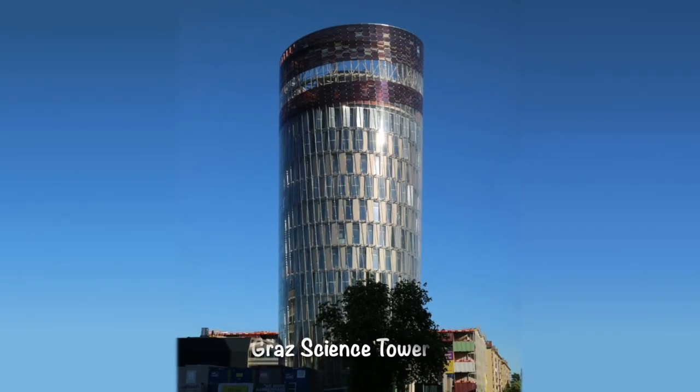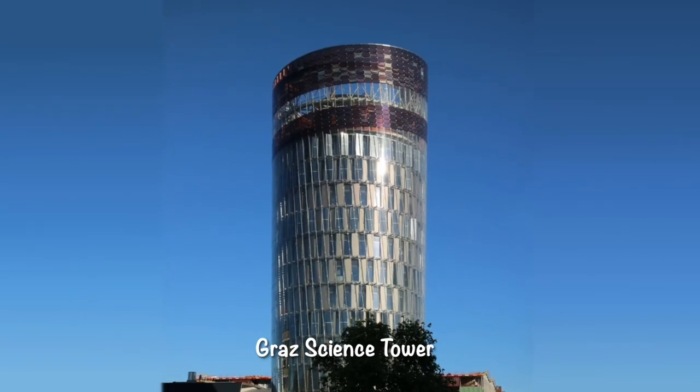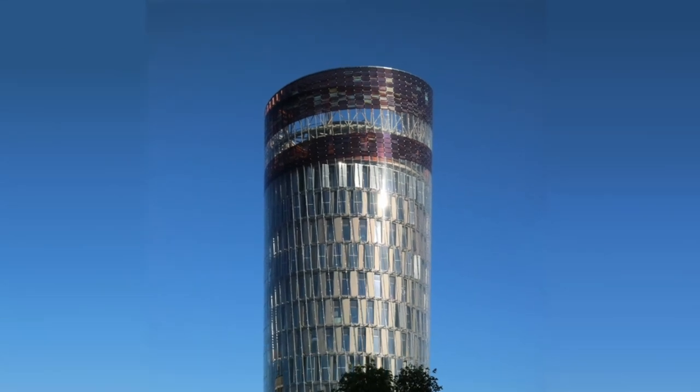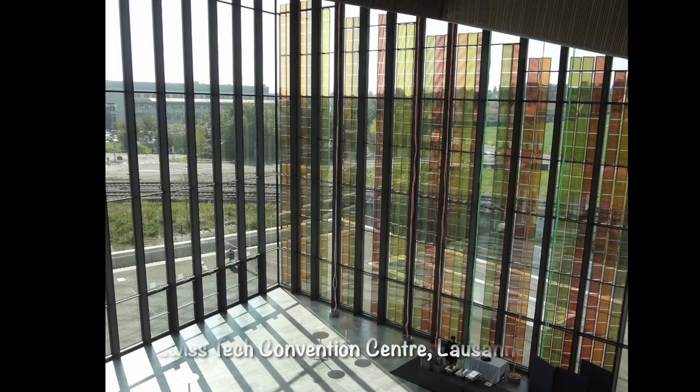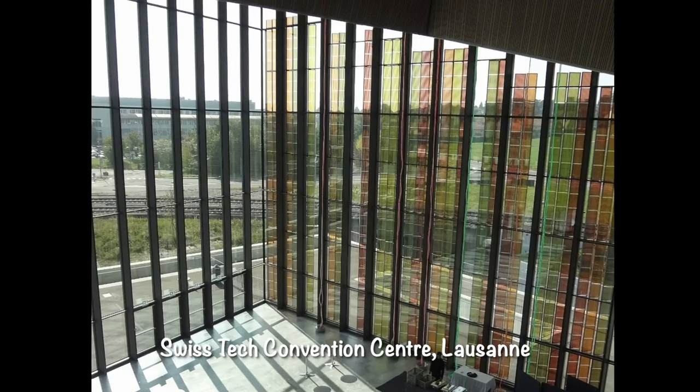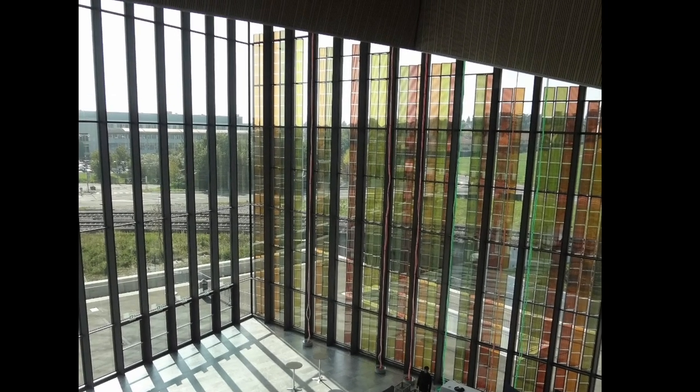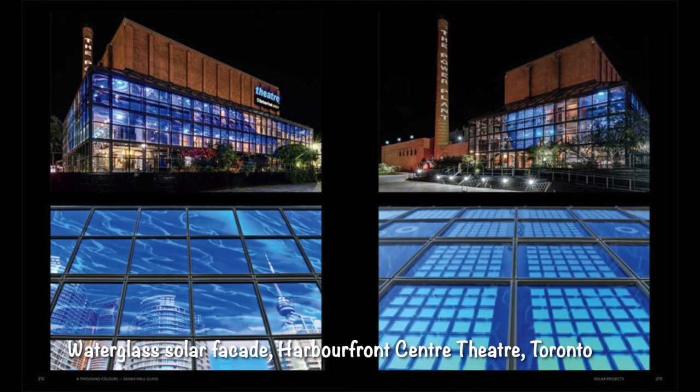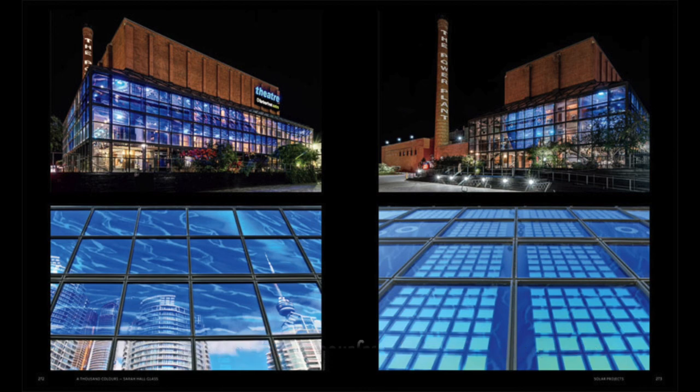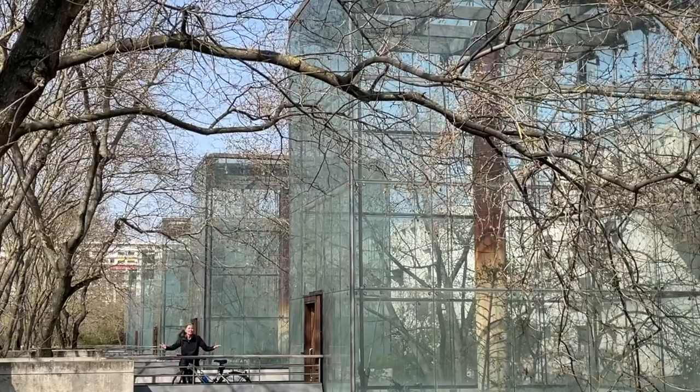Here are dye-sensitized solar cells on the upper floors of the Science Tower in Graz, Austria. And here they are in the windows in the Conference Center in Lausanne, Switzerland. Because they're transparent and colorful, they not only make the building attractive, but they provide power as well. How cool is that?